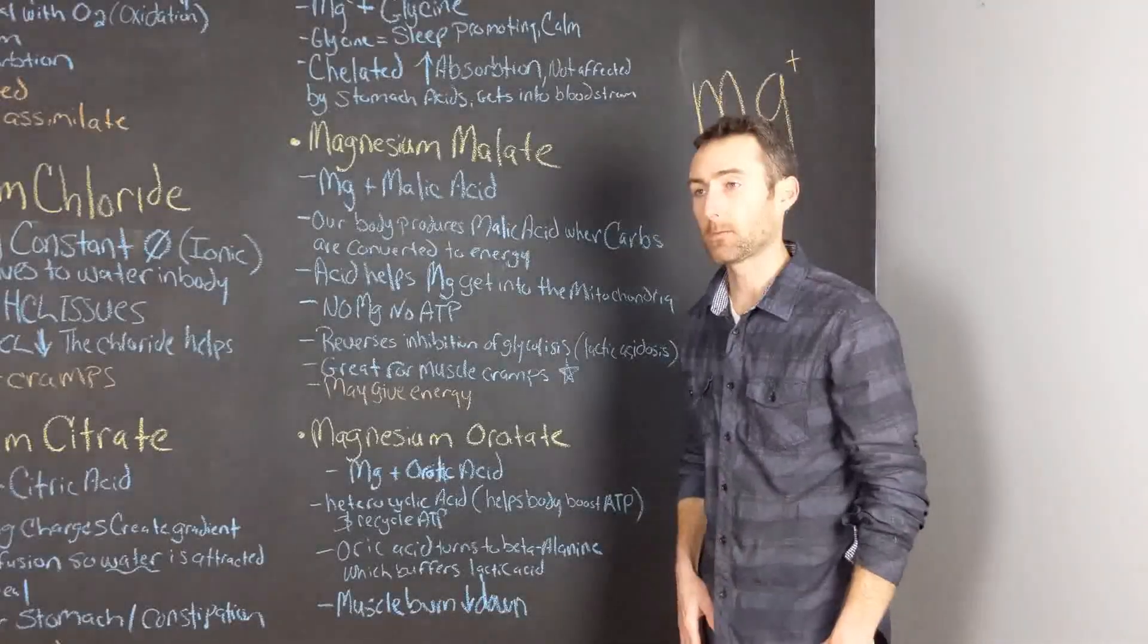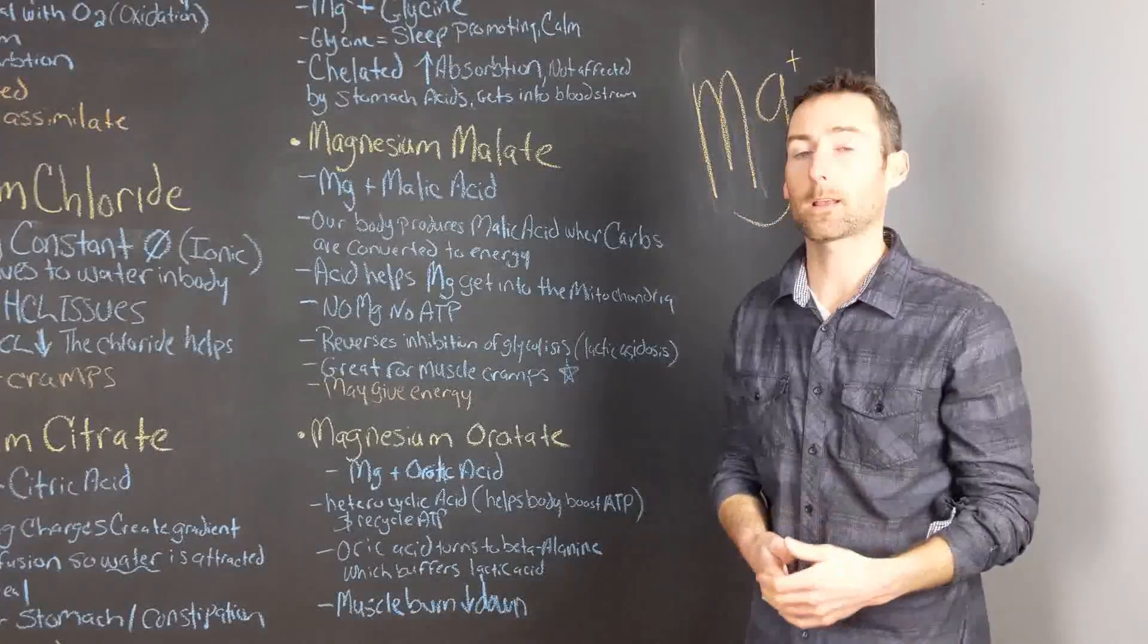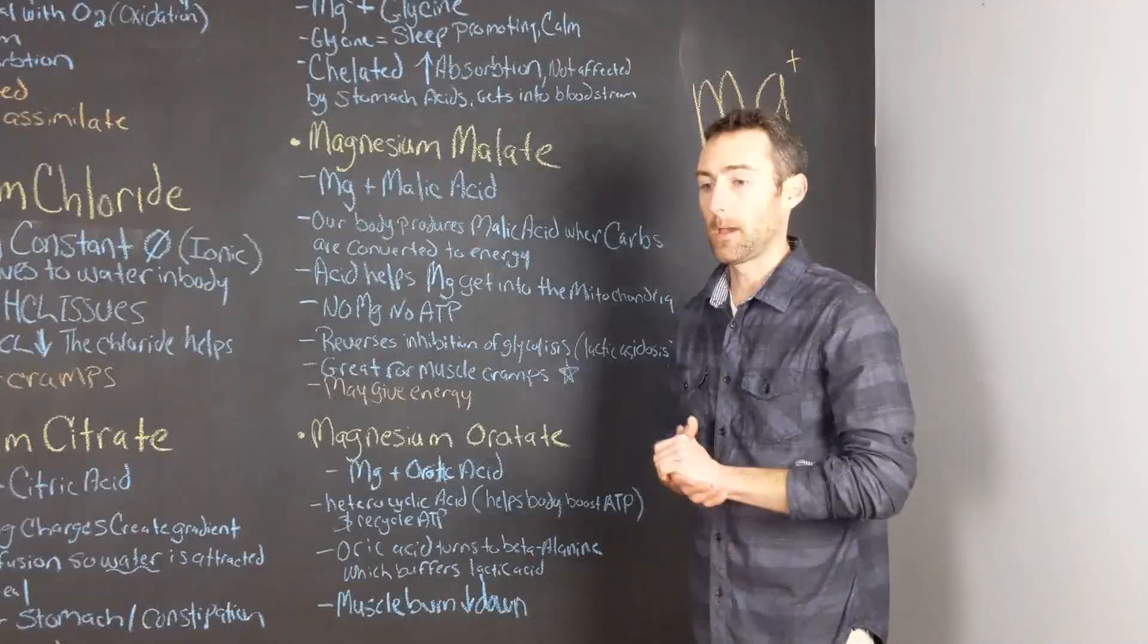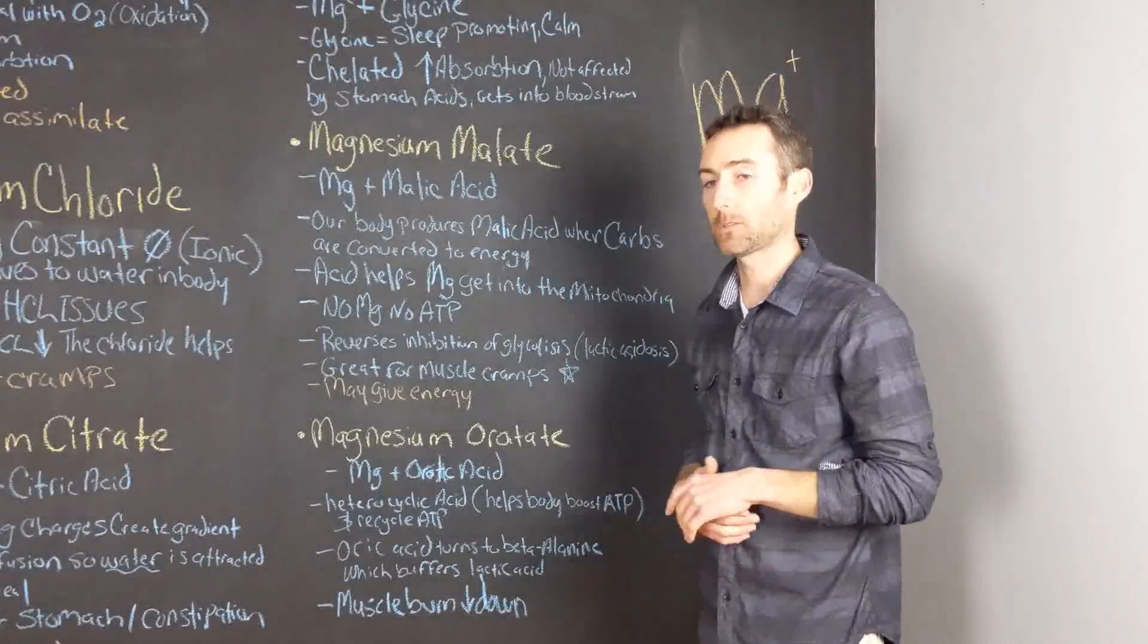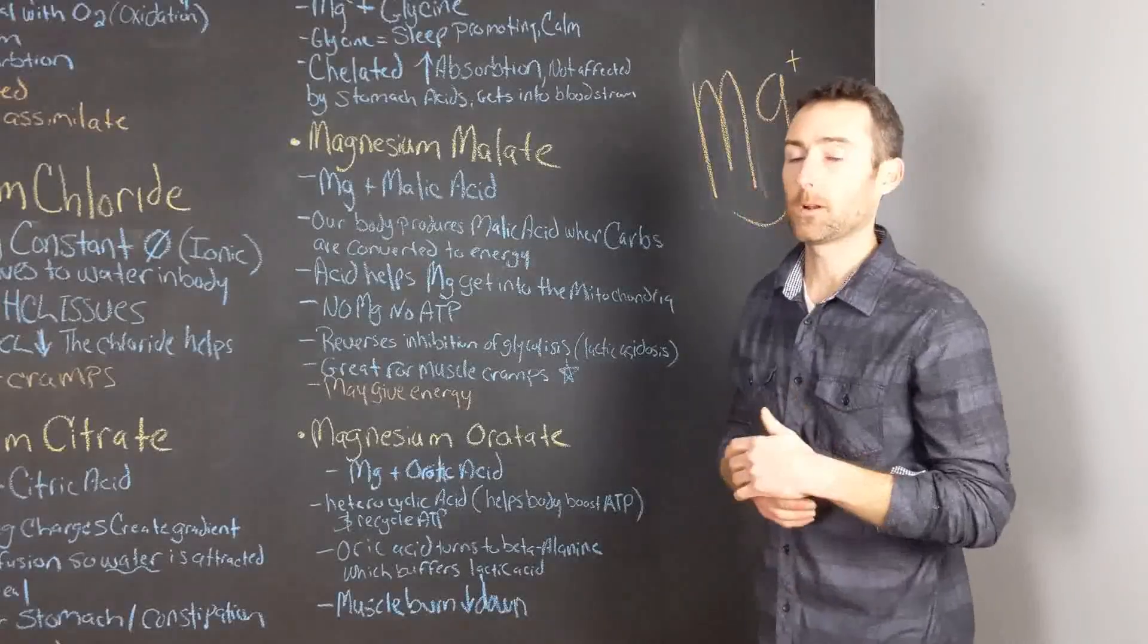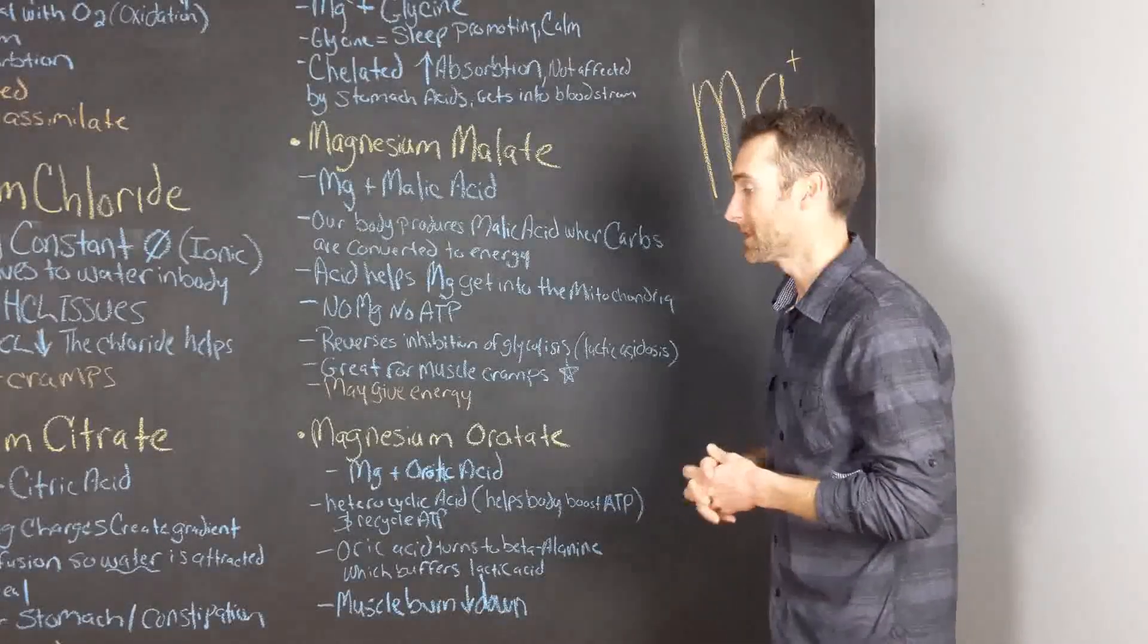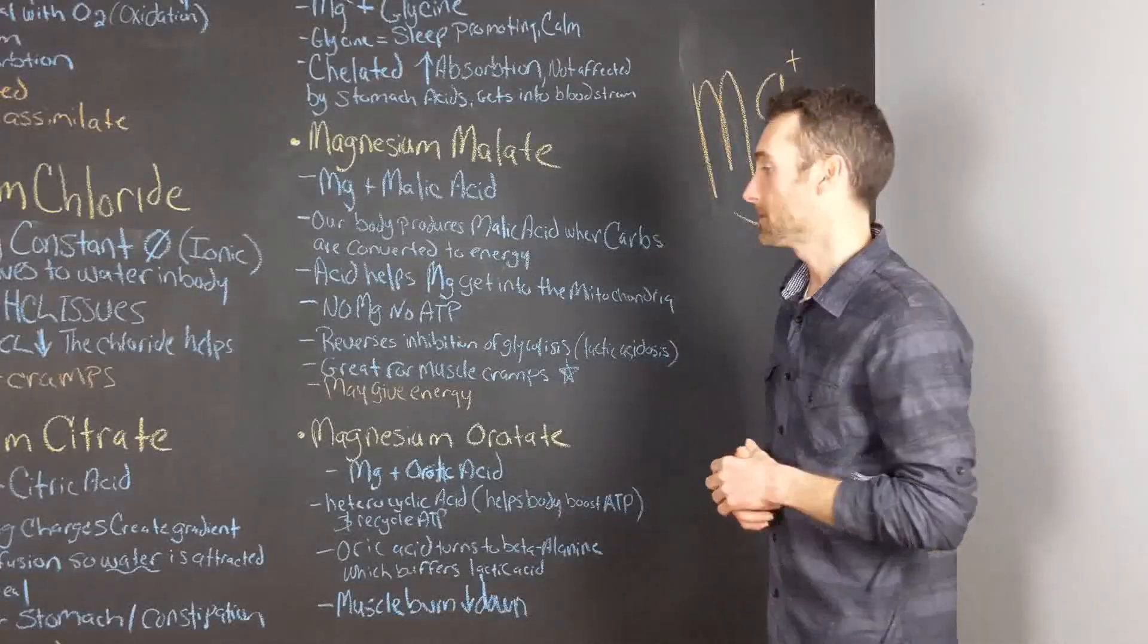Lactic acid basically forms delayed onset muscle soreness. When people work out or you do some physical activity and you get that muscle strain, lactic acid is produced from your cells in your muscles and that soreness. This type of magnesium is perfect for athletic performance or anyone that is looking to reduce their lactic acid buildup. It actually prevents muscle breakdown. This form of magnesium is really good. It's really expensive. It's not widely used.